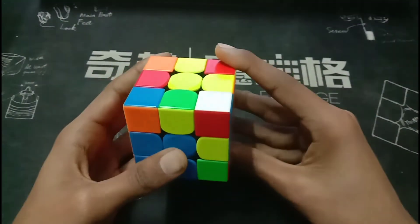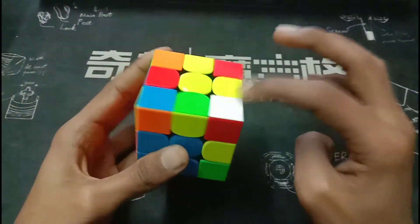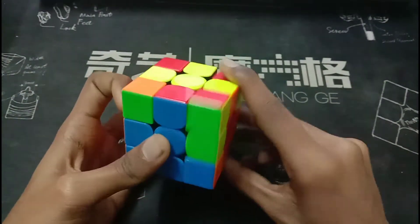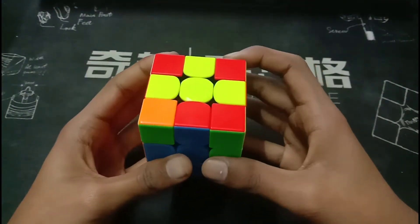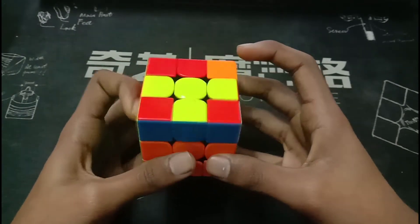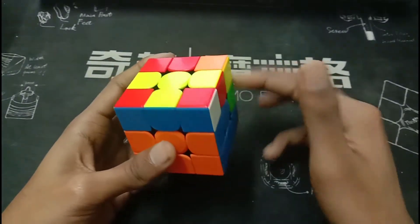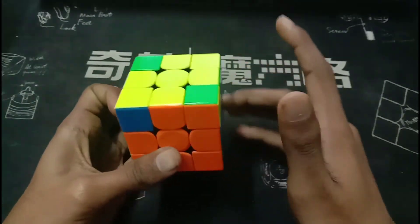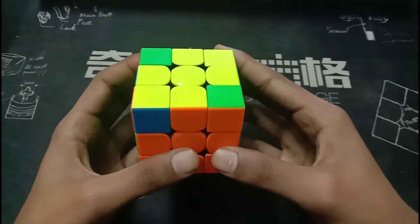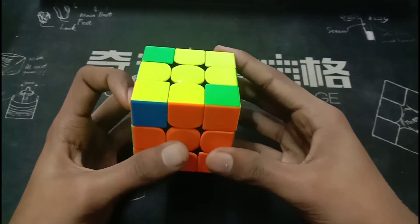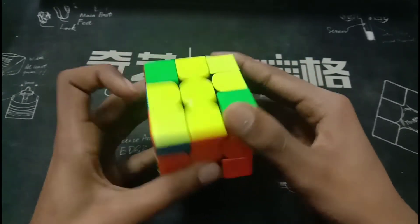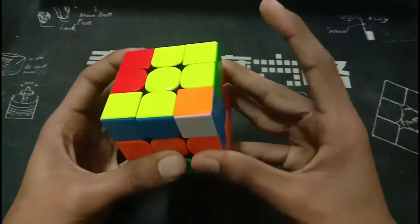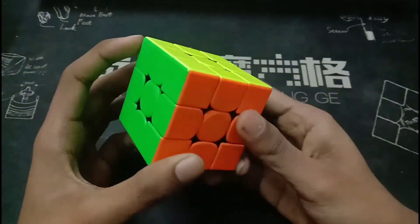So for the fourth pair, what he does is he starts with an R. The pieces are here and here. He starts with an R. Then he does a U' R' to separate these two. Then he rotates, he does a U' R' to identify which one it is. Then he starts with the ZBLL.